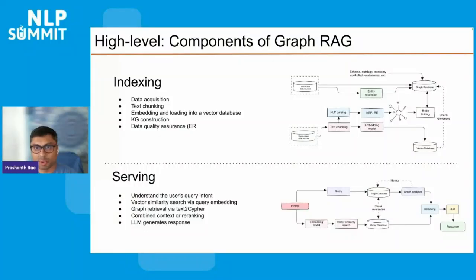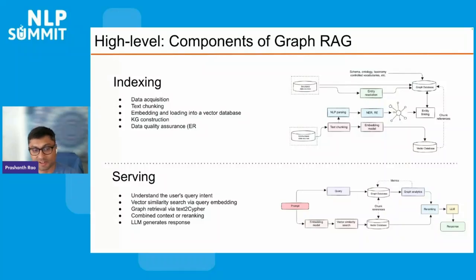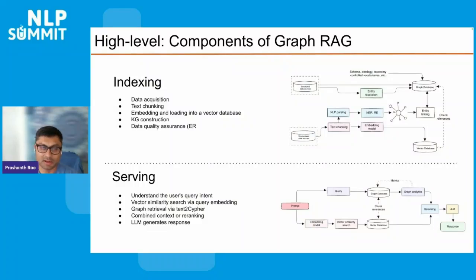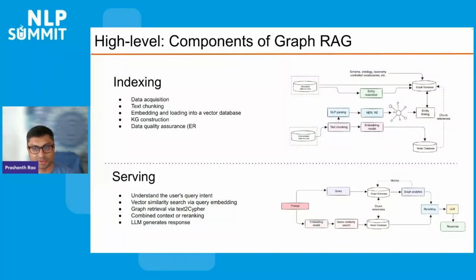The second component of a GraphRAG system is the serving component. This is where you understand the user's query intent, perform vector similarity search via query embeddings, perform graph retrieval via text-to-Cypher or similar pipelines, and then apply a combined context phase or re-ranking phase downstream. Finally, the response is generated by an LLM using this retrieved context. We'll go into finer details of either of these systems in the next two slides.